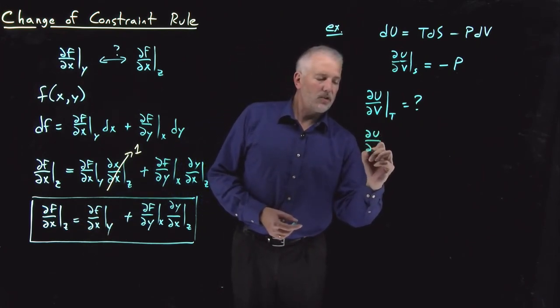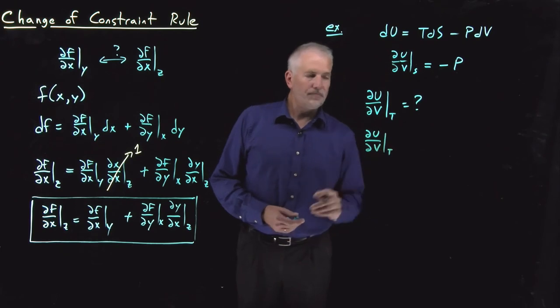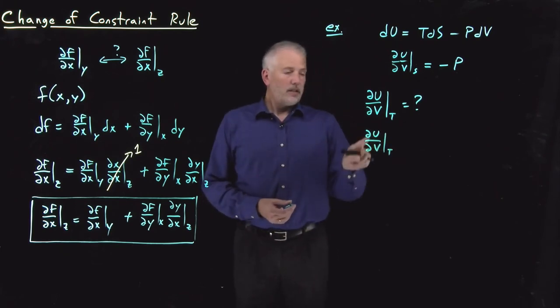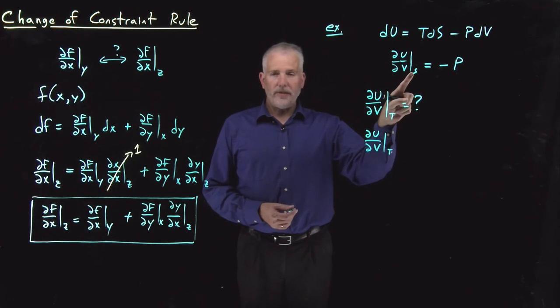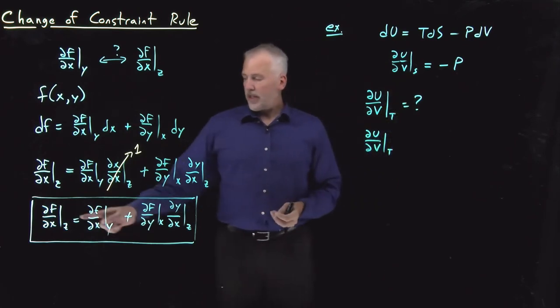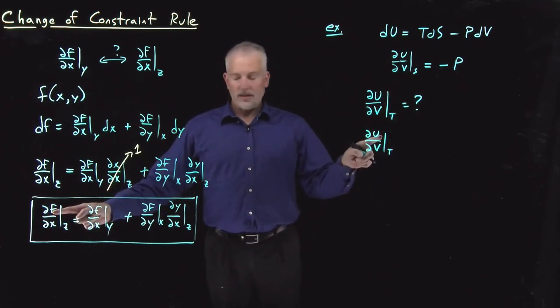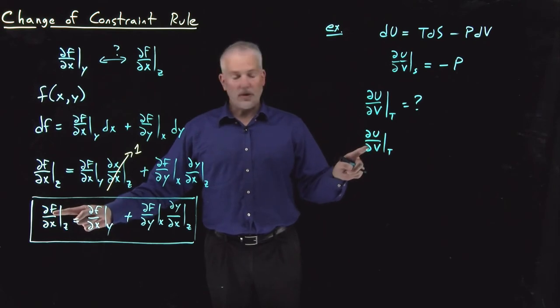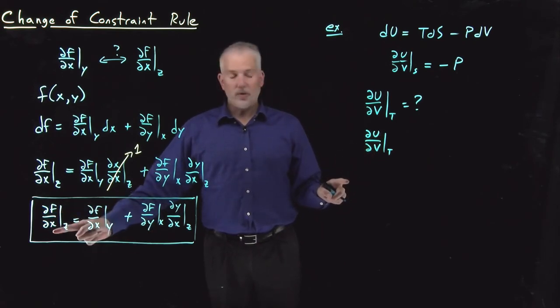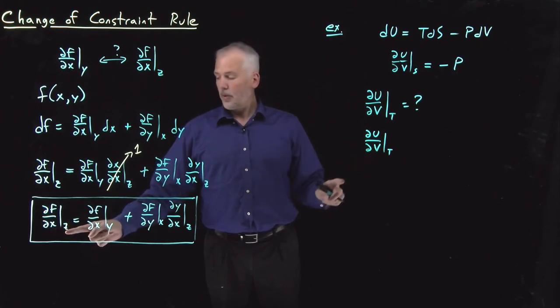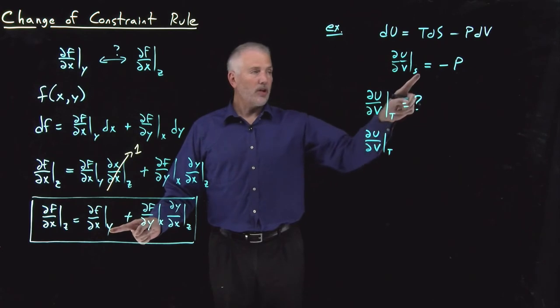If we use that change of constraint rule to figure out ∂u/∂V at constant T, knowing what we know about ∂u/∂V at constant S, we just have to make a correspondence between these variables f. The f's are going to be like our u's. Where we have x's in this change of constraint rule, we're going to use V. Where we have z's, we're going to use T. And when we have y's, the one we already know, we're going to use S.